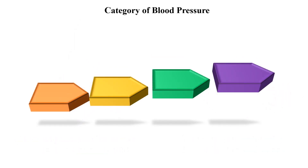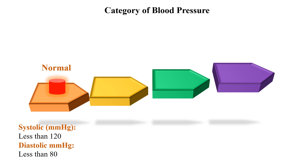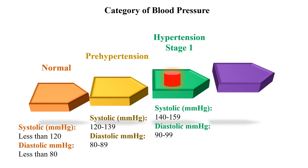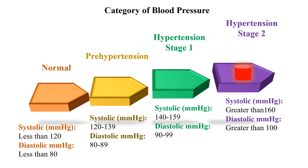Blood pressure is categorized into normal, pre-hypertension, hypertension stage 1, and hypertension stage 2. Blood pressure is normal when systolic is less than 120 mmHg and diastolic is less than 80 mmHg. In pre-hypertension, systolic ranges from 120 to 139 mmHg and diastolic from 80 to 89 mmHg. In hypertension stage 1, systolic ranges from 140 to 159 mmHg. In hypertension stage 2, systolic is greater than 160 and diastolic is greater than 100 mmHg.